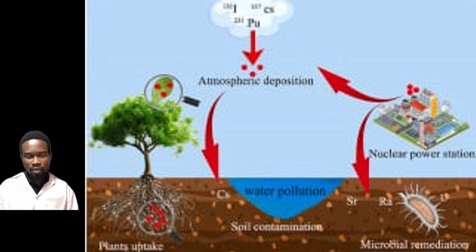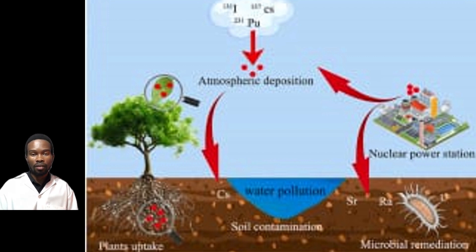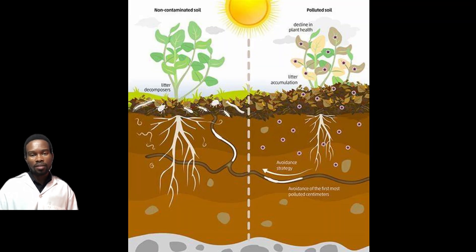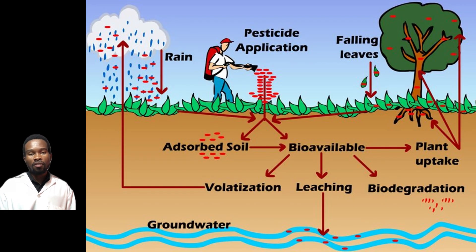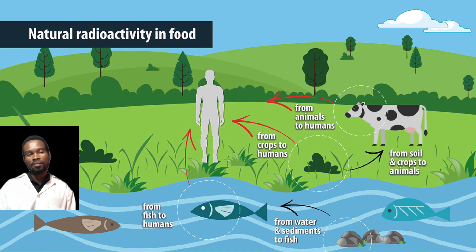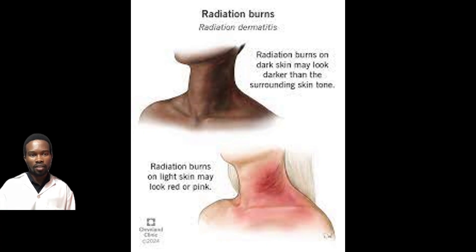Radioactive waste can react with soil components and result in soil being toxic and infertile. It impacts plant growth and contamination of crops, as well as leaching of groundwater and surface water, contaminating drinking water and disrupting aquatic life. Radioactive substances can be ingested by animals, destroying the food chain. Humans can experience skin burns, radiation sickness, cancer and cardiovascular disease.